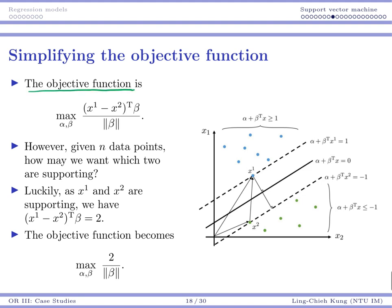The objective function as we previously formulated is this one. In particular, in the numerator is x1 minus x2 transpose times beta. So here, there's a question. You actually get a lot of points, and before you do the optimization, you don't know your separating hyperplane.